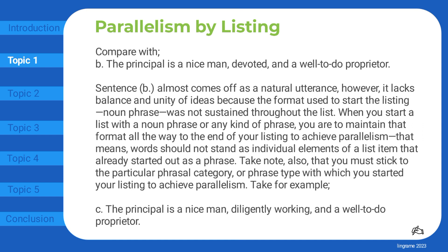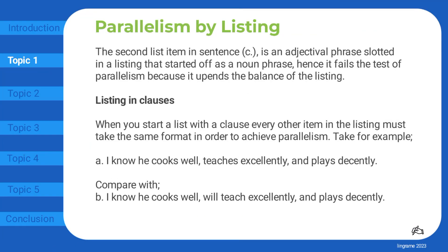When you start a list with a noun phrase or any kind of phrase, you are to maintain that format all the way to the end of your listing to achieve parallelism. That means words should not stand as individual elements of a list item that already started out as a phrase. Take note also that you must stick to the particular phrasal category or phrase type with which you started your listing. For example: the principal is a nice man, diligently working, and a well-to-do proprietor. The second list item in sentence C is an adjectival phrase slotted in a listing that started off as a noun phrase, hence it fails the test of parallelism because it upends the balance of the listing.